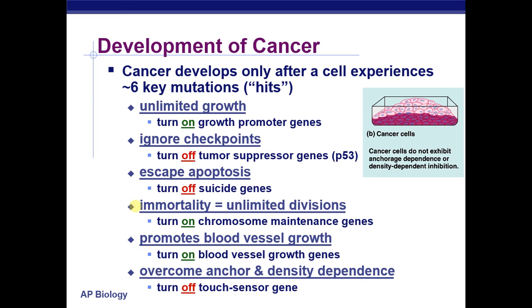Cancer cells also promote blood vessels to grow around them — a process called angiogenesis — so they can take in as much of the body's nutrients as possible to promote more cell growth.